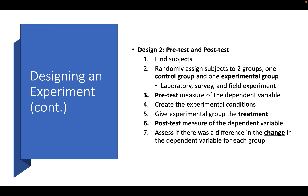The second design involves both pre-test and post-test. We find subjects, randomly assign them to two groups — one control group and one experimental group — across laboratory, survey, and field experiment variations. The pre-test measure of the dependent variable is taken first. Then we create the experimental conditions, give the experimental group the treatment, and then do a post-test measure of the dependent variable. We then assess whether there's a difference in the change in the dependent variable from pre-test to post-test for each group.